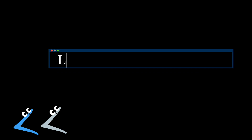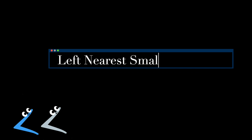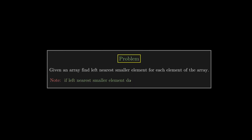In this video we will see how to approach the Left Nearest Smaller Element problem. The problem statement is: given an array, find the left nearest smaller element for each element of the array. If the left nearest smaller element doesn't exist, consider minus one as the answer.